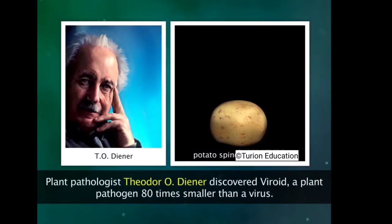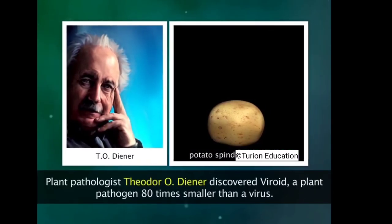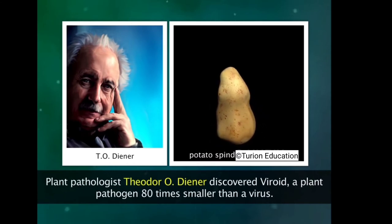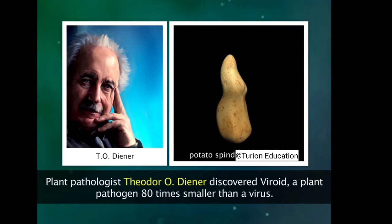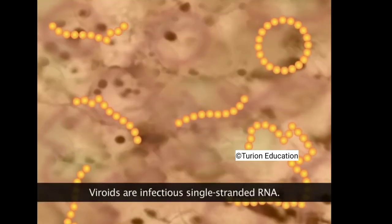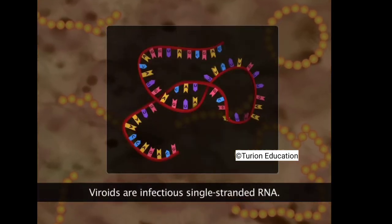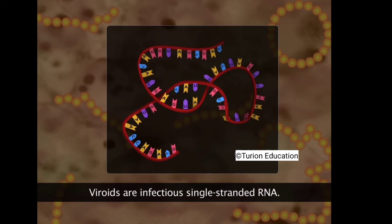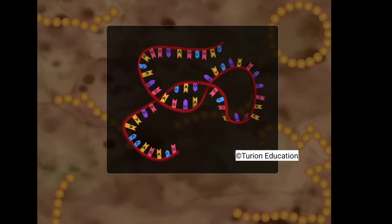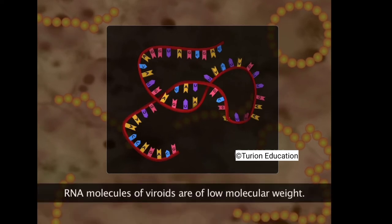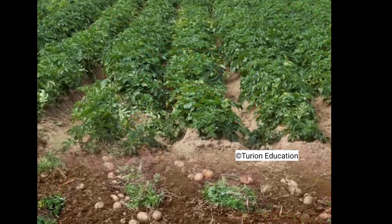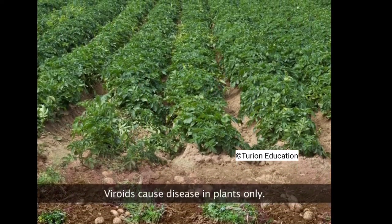In 1971, T.O. Diener discovered an infectious agent smaller than viruses that caused potato spindle tuber disease — he called this agent a viroid. Viroids are extremely simple infectious agents smaller than viruses and lack a protein coat. They exist as circular single-stranded RNA molecules with some double-stranded regions, containing 300 to 400 nucleotides, and to date have been found only to cause diseases in plants.